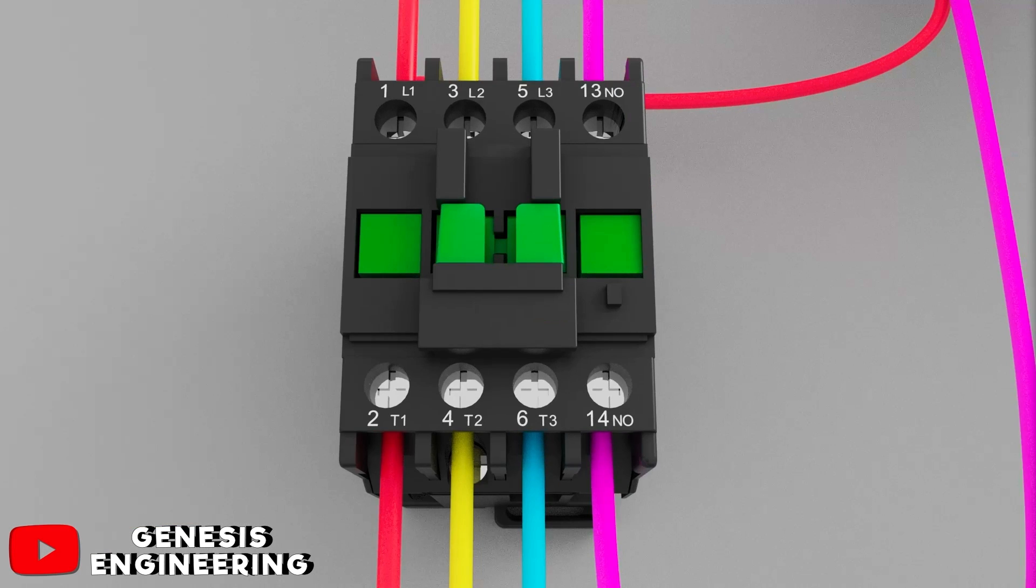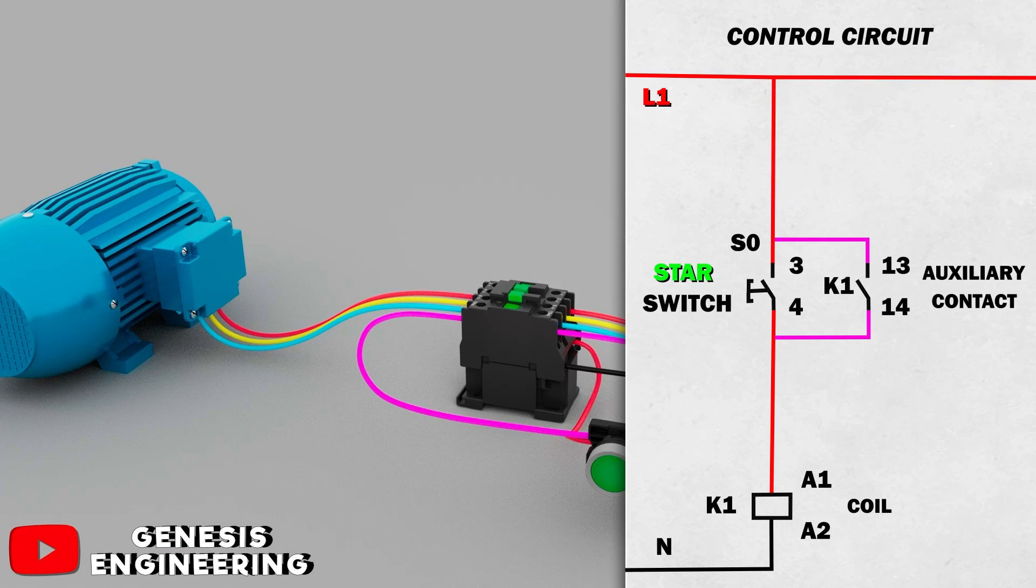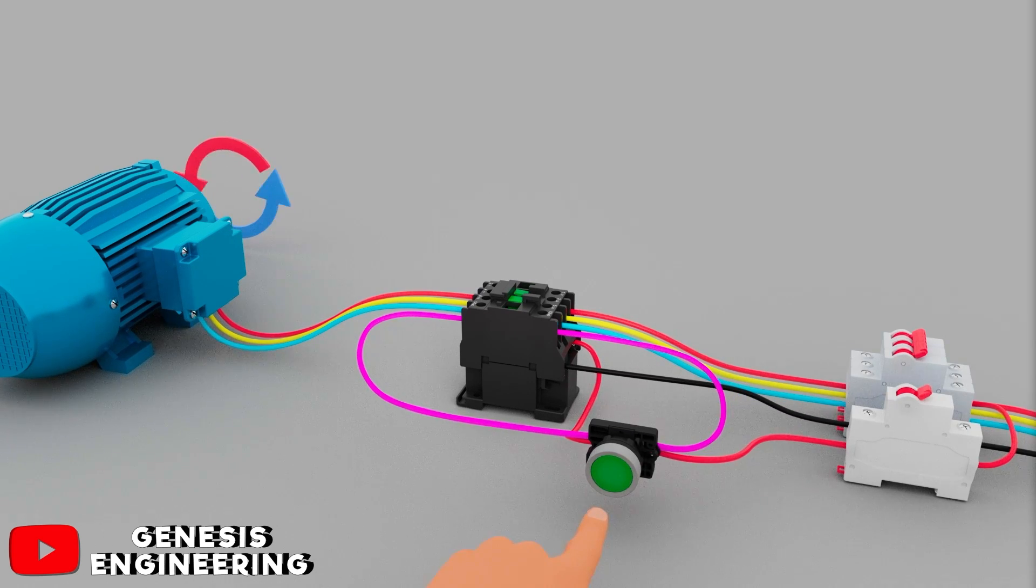In this way, we made a parallel path for the energy to pass, which keeps the contactor on without the button being pressed, using the contactor's auxiliary contacts. Now when we press the button, the contactor will stay on because of the contact holding, because it now has a parallel path for the power to pass through and keep the motor running.